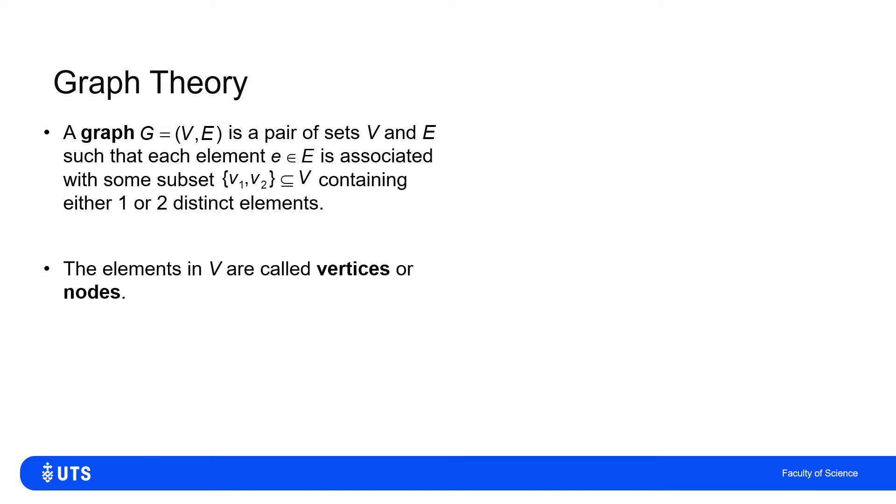Now we're calling it set V because the elements of it are what we call either the vertices or the nodes of the graph. And the elements in E are the edges.